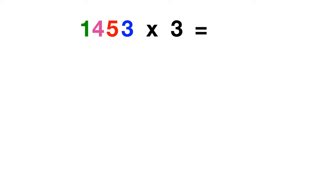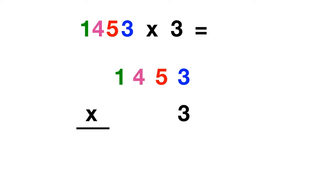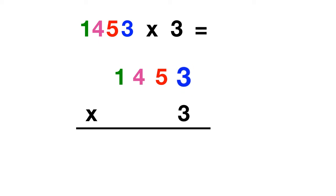We'll write out 1453 times 3. Then we begin by multiplying 3 times 3 ones. 3 times 3 is 9.